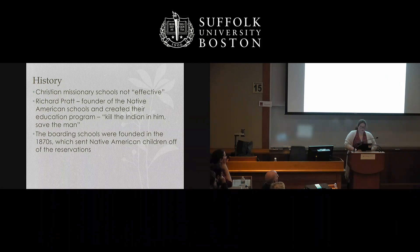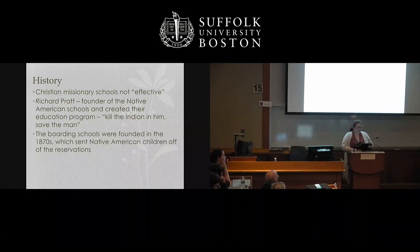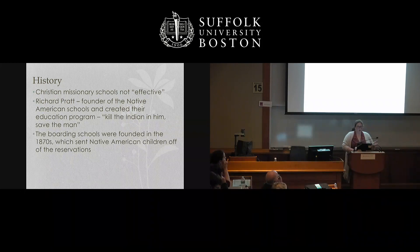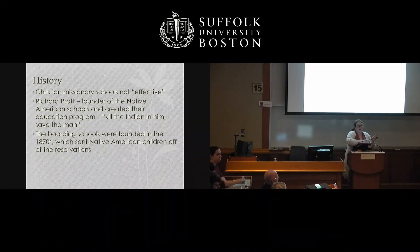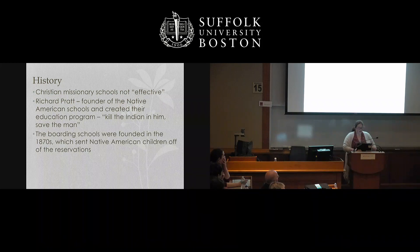However, the Christian schools weren't seen as effective enough — they weren't assimilating enough Native students into white culture. So during the Civil War era, a man named Henry Richard Pratt thought about how to get them to assimilate more, and he thought of boarding schools. His motto was 'kill the Indian in him, save the man' — stripping away every part of a Native's personality, culture, and identity in order to place them into white society. The government believed that the problem could be solved through intensive assimilation programs, literally taking children far from home to eradicate Native culture.